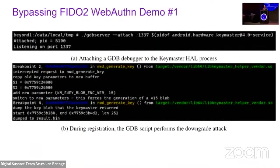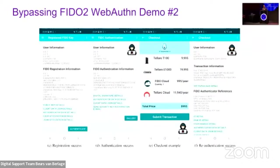In our demo on Galaxy S10, we use GDB to implement the downgrade attack and then use our IV reuse attack to recover the private key. We use the StrongKey FIDO server and sample application without any modifications. After registration, we recover the private key of the authentication key blob, verify it against the attestation certificate, and to complete our demo we use a separate application that does not use TrustZone and simply uses the recovered key. We managed to successfully authenticate against the StrongKey remote server over the internet.